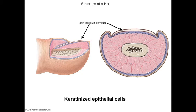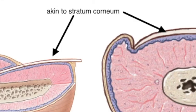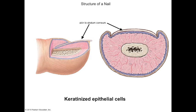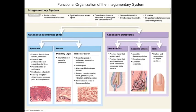The last accessory structure is nails. Instead of the most superficial layer of the epidermis becoming the stratum corneum, it becomes a very hard, durable keratinized layer that makes up the nails. That covers the integumentary system — the cutaneous membrane with its main layers and sub-layers, and the accessory structures important to its function.